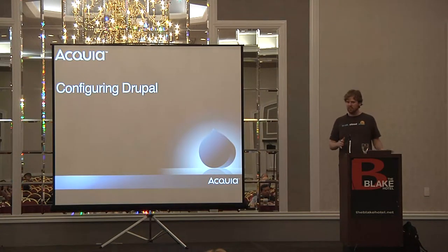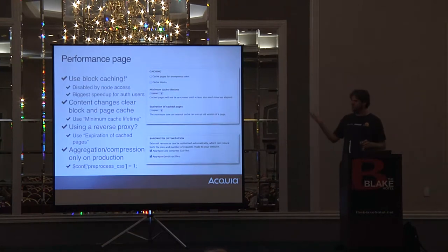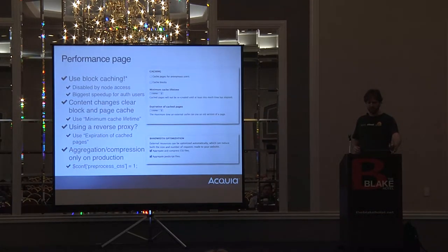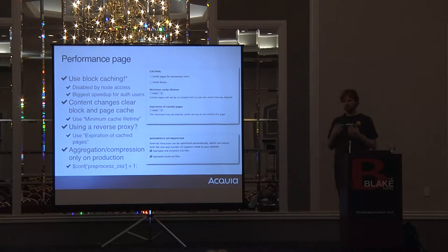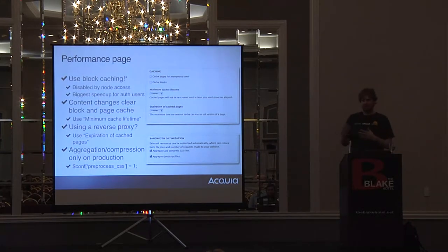Configuring Drupal: what can you do physically on your site to change how Drupal's performing? Page caching goes without saying — if users are anonymous and you're not displaying anything special for them, there's no real reason not to cache pages. Caching blocks is really key for authenticated users — one of the best things you can do. Out of the box, it gets disabled by node access modules: organic groups, taxonomy access control, content access — all those types. If those are turned on, you can't use block caching. If you don't really need them, you're losing a big performance gain.